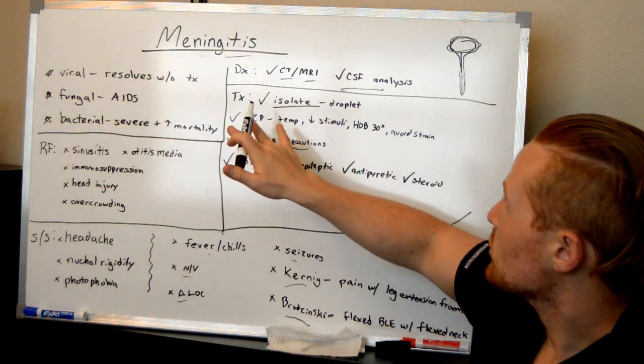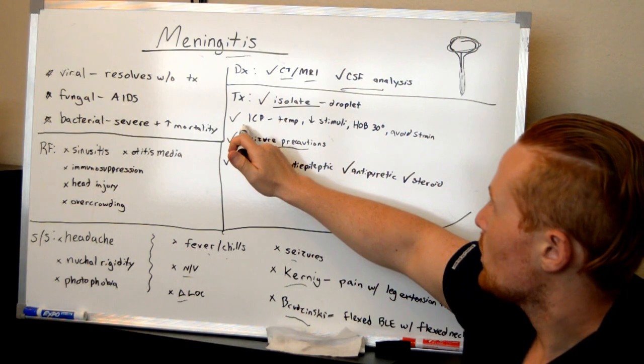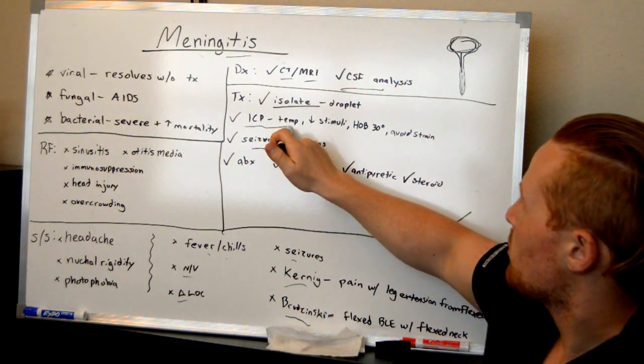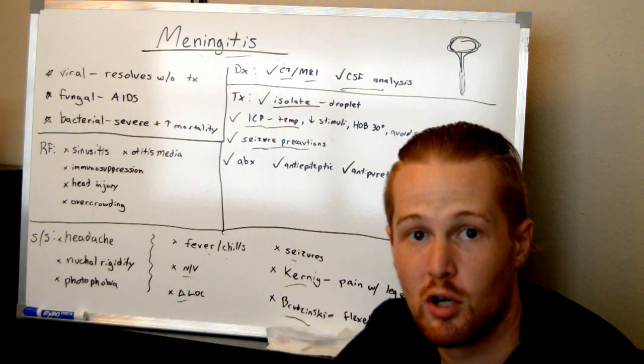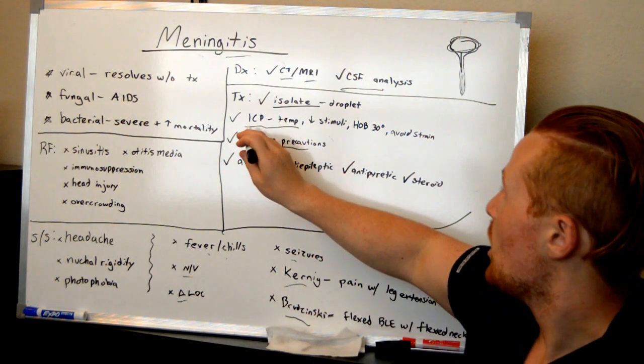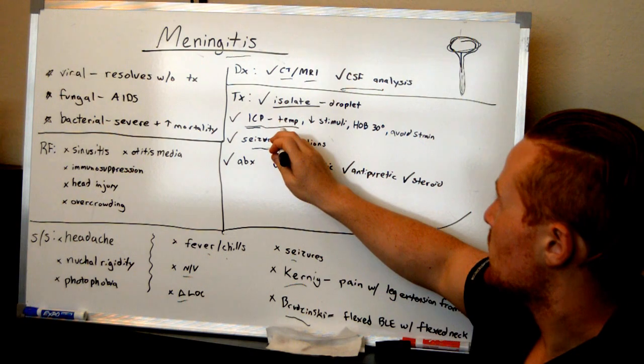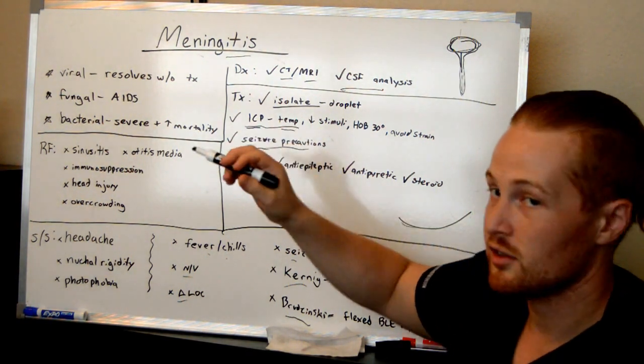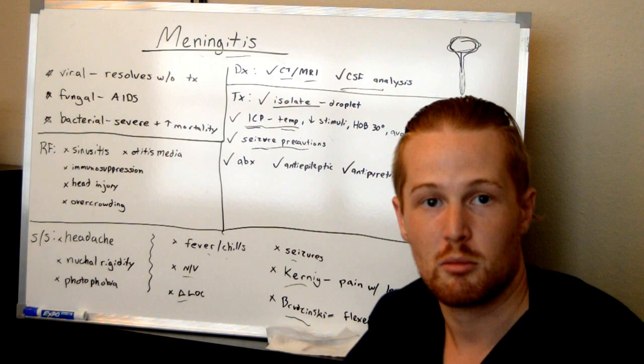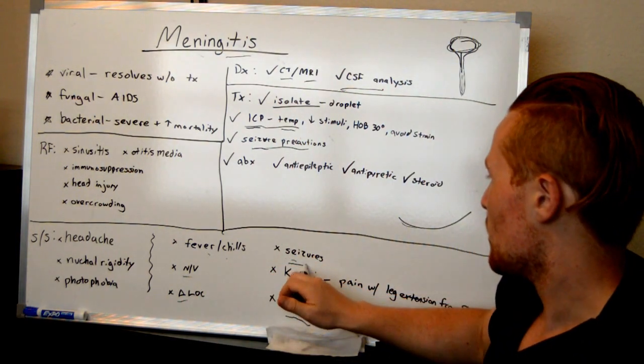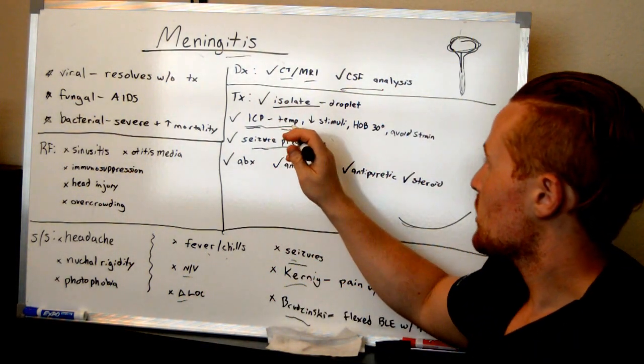Now, as far as care for a patient with meningitis, you also want to monitor and treat and prevent increases in intracranial pressure. I have another video, a great video, about intracranial pressure. But what you want to do is you want to make sure they don't run a fever because fevers can cause increased pressure in the brain, which will lead to stuff like seizures and other problems. So make sure they're not running a fever.